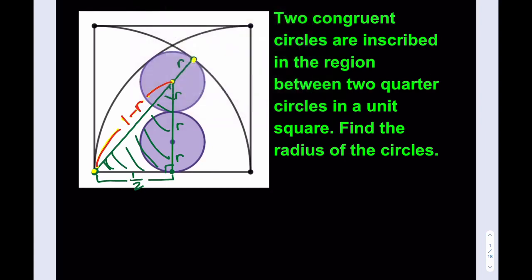Okay, so now I have one half squared plus r plus r plus r is 3r, squared. And that is equal to 1 minus r squared. Beautiful.